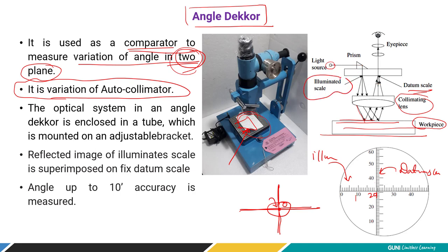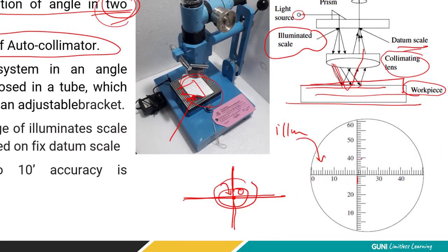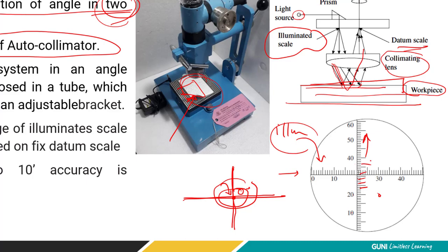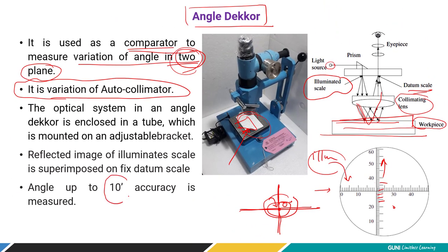If you insert a workpiece with a certain inclination theta, the reflected image of the illuminated scale will show a deviation. It will no longer coincide at the 0,0 point of the datum scale — it will have a deviation. Vertically it may read 30 or 20, showing inclination in two planes. The horizontal scale shows horizontal inclination and the vertical difference shows vertical deviation. Each linear graduation has a certain value, and the angle decker is accurate up to 10 minutes.